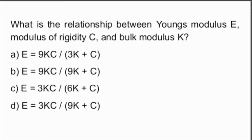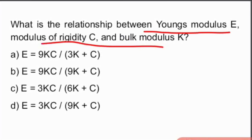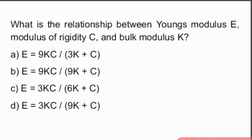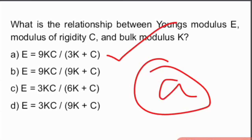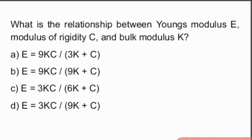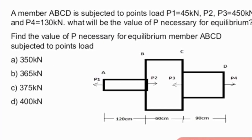Next question: what is the relationship between Young's modulus, modulus of rigidity, and bulk modulus — all three elastic constants? The relation between E, C, and K is: E = 9KC / (3K + C). This is the relation between all three elastic constants.